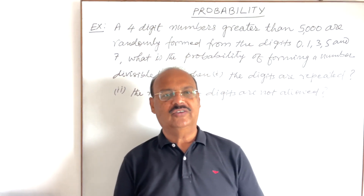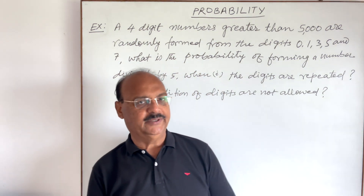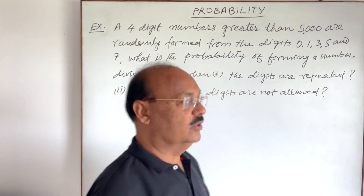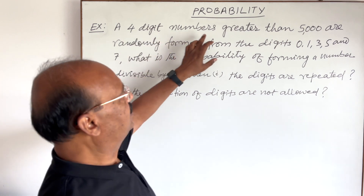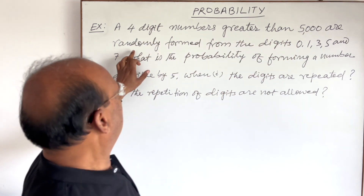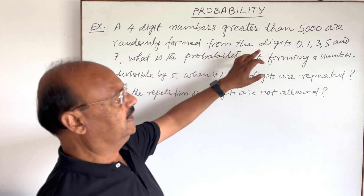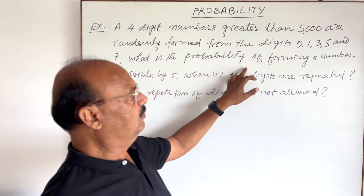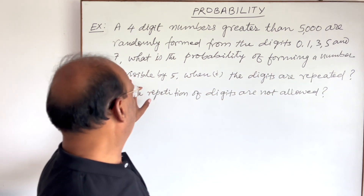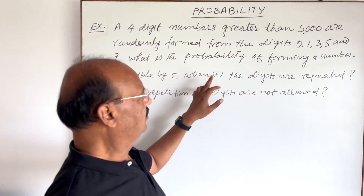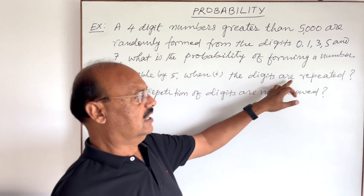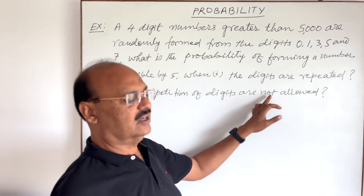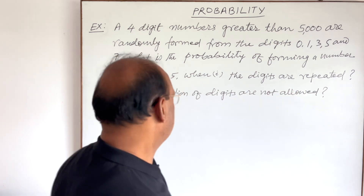Welcome students. Let us see a very important question from the chapter on Probability. This question has been taken from the NCERT book of Standard 11. The question is: four-digit numbers greater than 5000 are randomly formed from the digits 0, 1, 3, 5, and 7. What is the probability of forming a number divisible by 5 when, first case, the digits are repeated, and second case, the repetition of digits is not allowed?